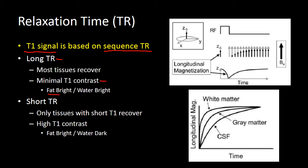With a long TR, both fat and water are bright, which is commonly seen in T2-weighted sequences. If you have a short TR in the range of 30 to 100 milliseconds, only tissues that rapidly recover their longitudinal magnetization will contribute a lot to the signal. So white matter or fat will be bright, while water, CSF, or fluid-filled structures will be dark because they have not had time to recover their longitudinal magnetization and don't have enough to harness with our RF pulse to create transverse magnetization measurable by our coils.